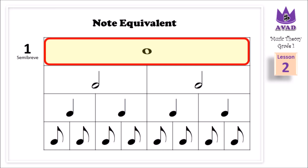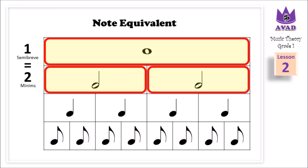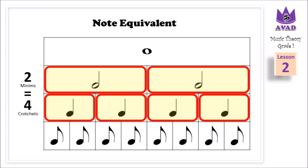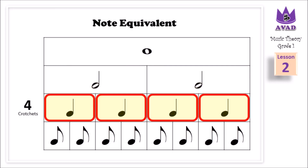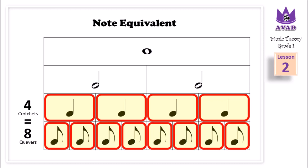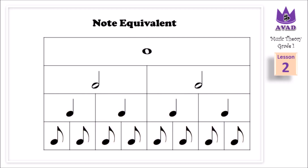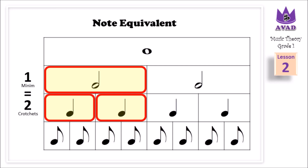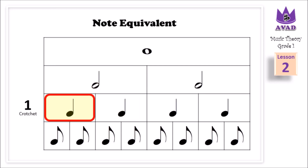1 semibreve is equal to 2 minims. 2 minims are equal to 4 crotchets. 4 crotchets are equal to 8 quavers. 1 minim is equal to 2 crotchets. 1 crotchet is equal to 2 quavers.